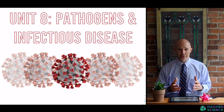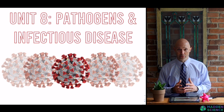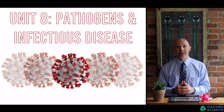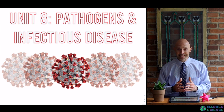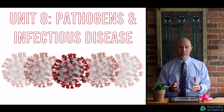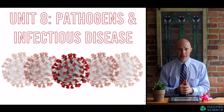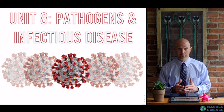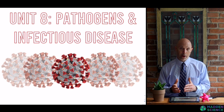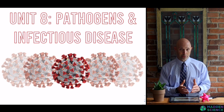Welcome to Madden Science. We're doing another flipped classroom lesson, this time with AP Environmental Science unit 8: pathogens and infectious disease. This one is particularly special in that we are at the very beginning — about three months in — to the COVID-19 coronavirus pandemic. The stats I'm giving you are current as of March 11th, 2020, so we'll see how these age in months and years to come.